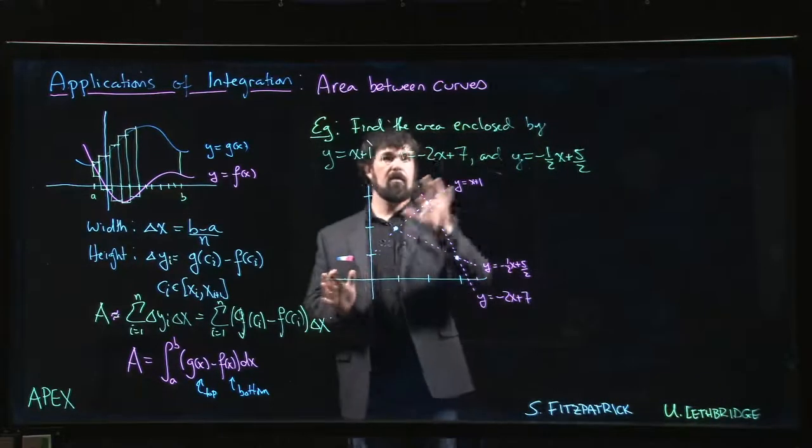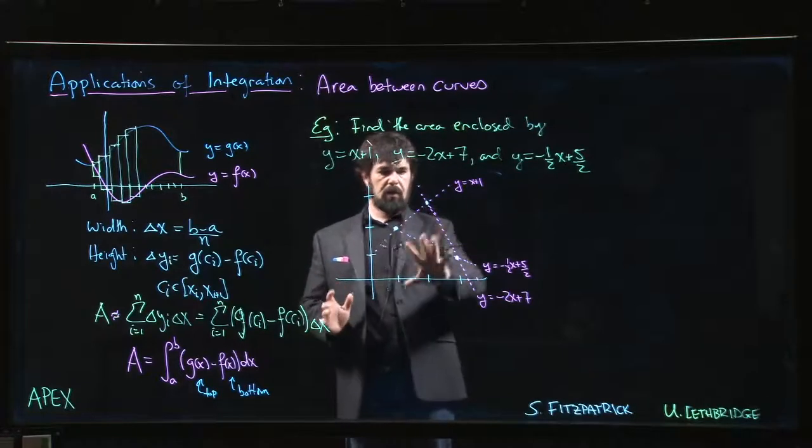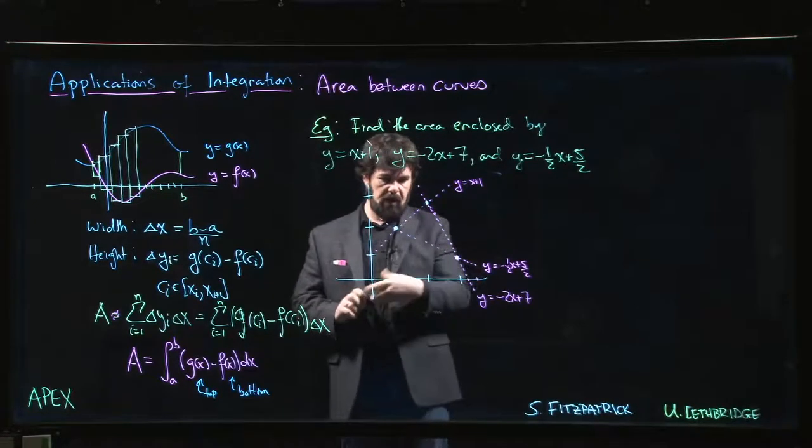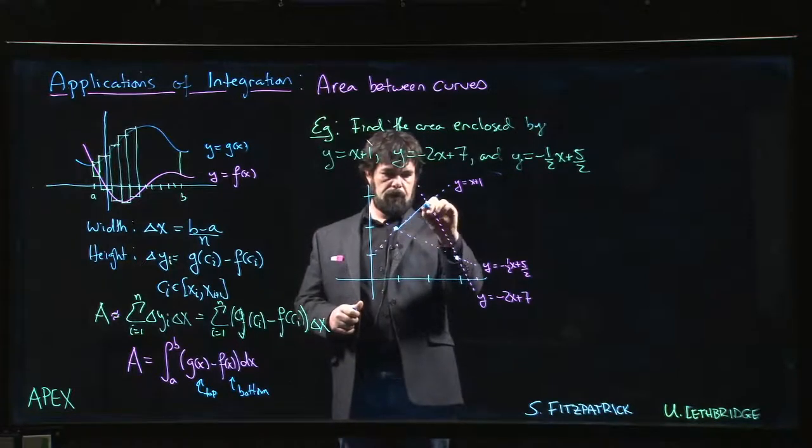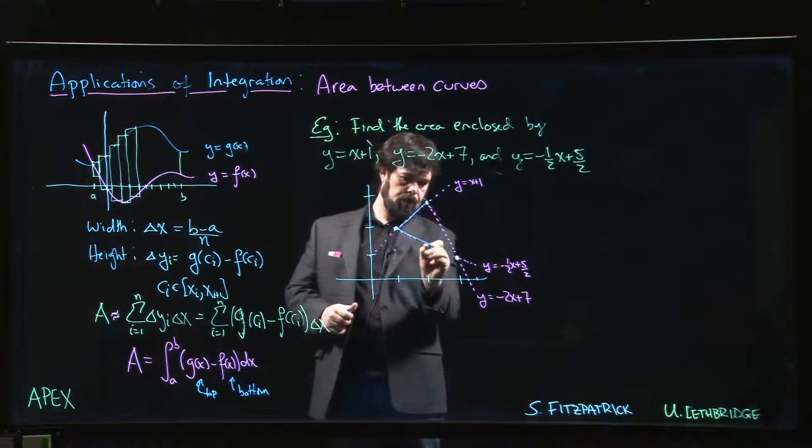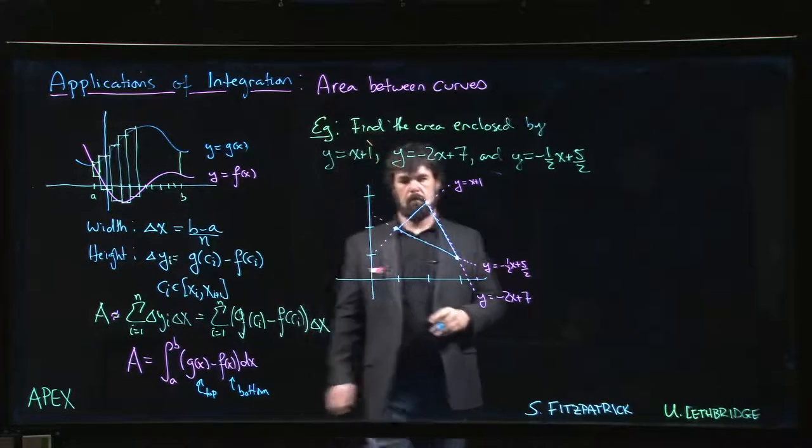Here's our next example. We want to find the area of a region that's enclosed by three lines. Now I've drawn the three lines sort of dashed here so that we can highlight the region. You can kind of see it, here to there to there.